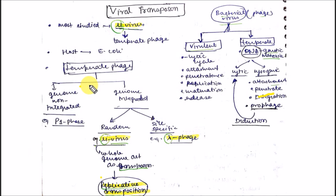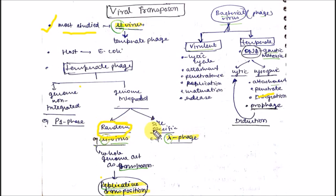The third classification is viral transposition. Class II transposition is divided into three parts: bacterial, eukaryotic, and viral transposition. In viral transposition there are two types: genome-integrated and genome-non-integrated. In genome-integrated, integration is random in new viruses and is most studied in temperate phage. Site-specific integration is present in lambda phage, while non-integrated genome is present in P1 phage.